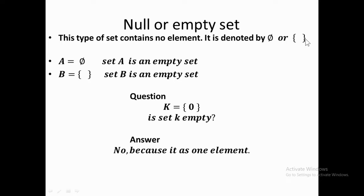An empty set is denoted by the symbol zero with a line crossed through it, or by two curly brackets with nothing inside. If set A equals this symbol, that means set A is an empty set. If set B has two curly brackets with no element inside, that also means it is empty.